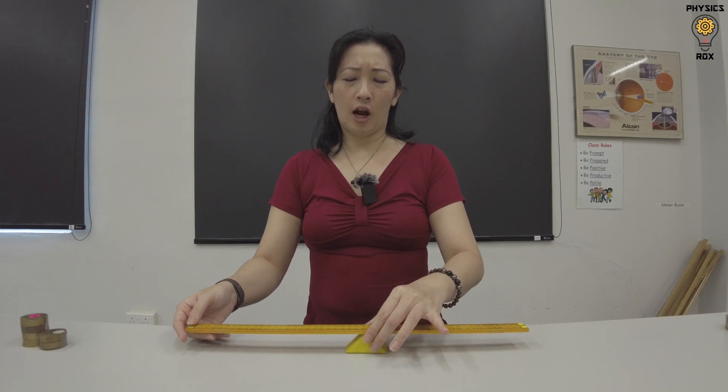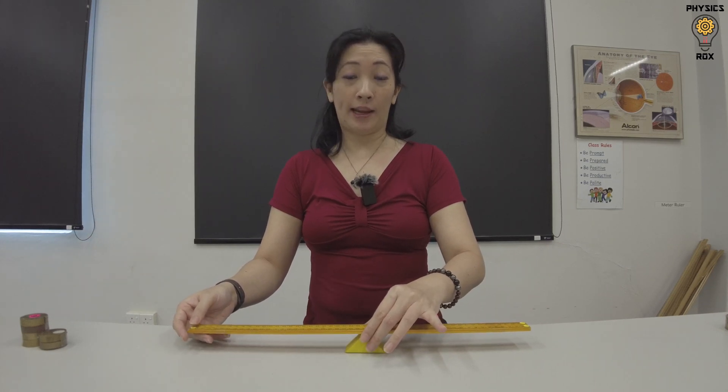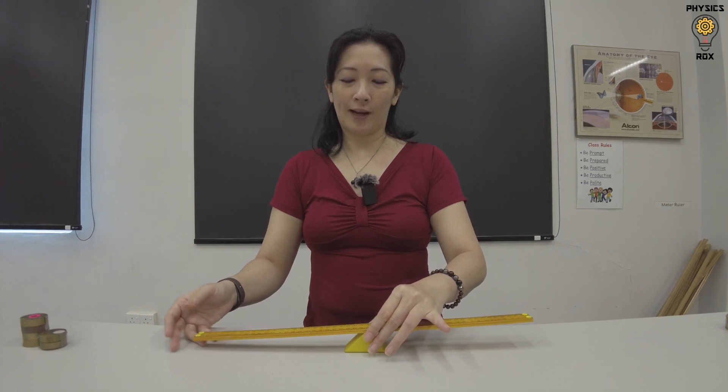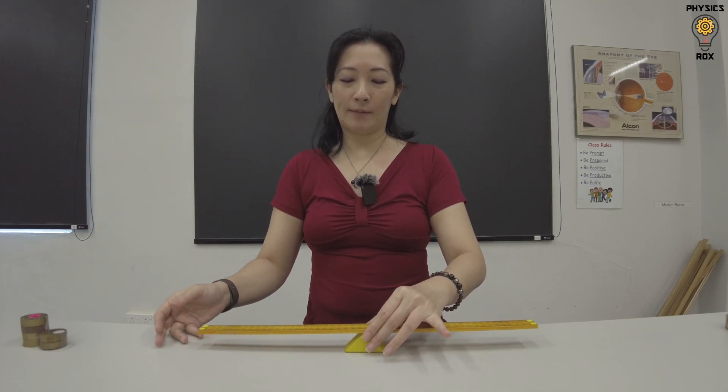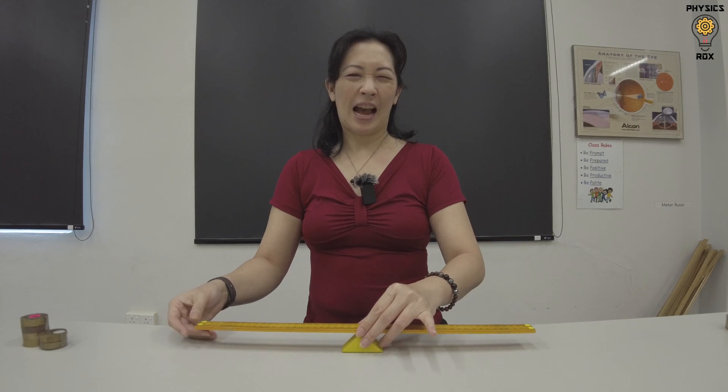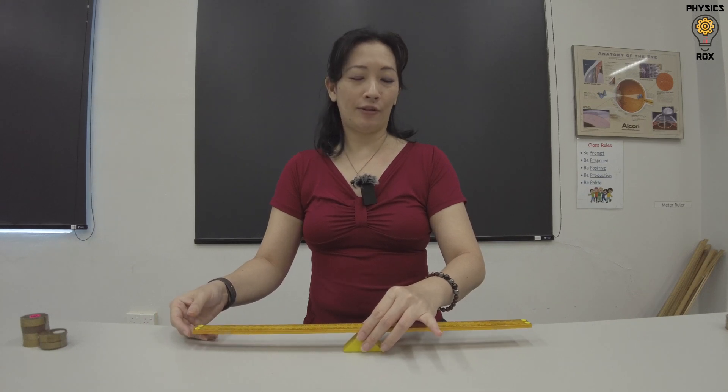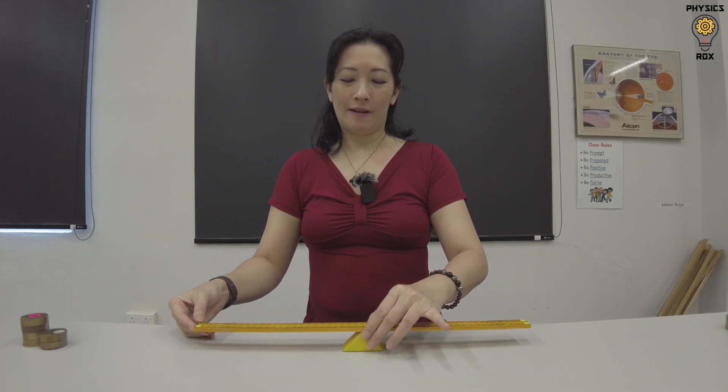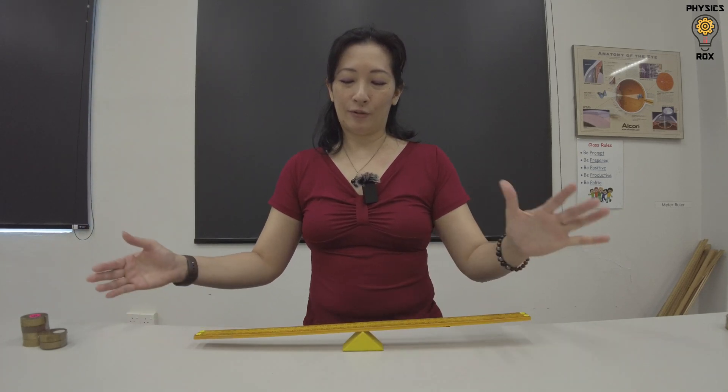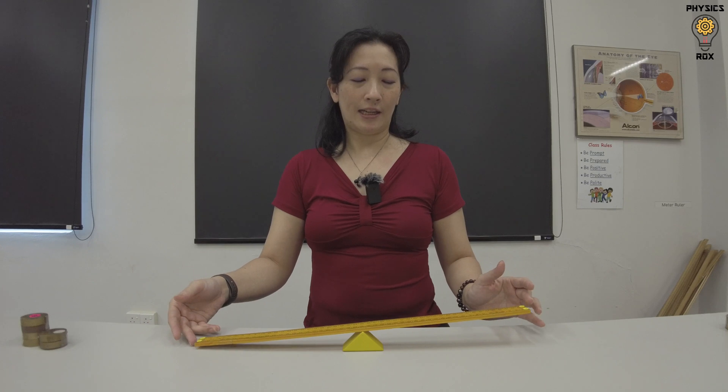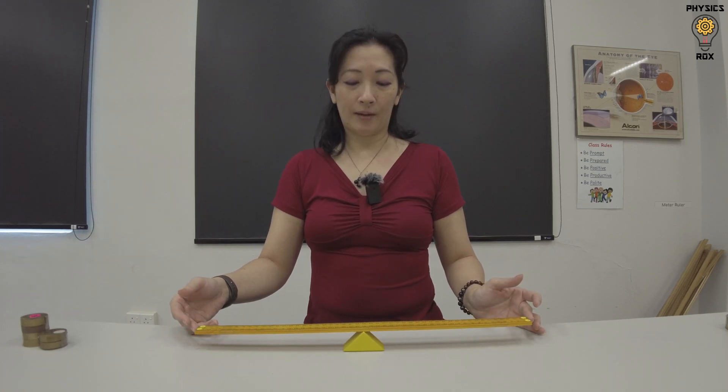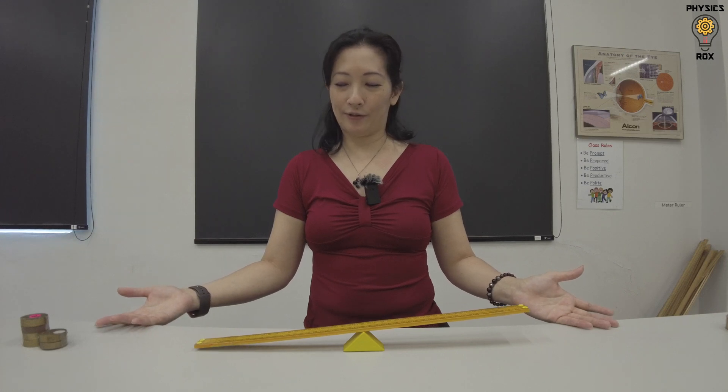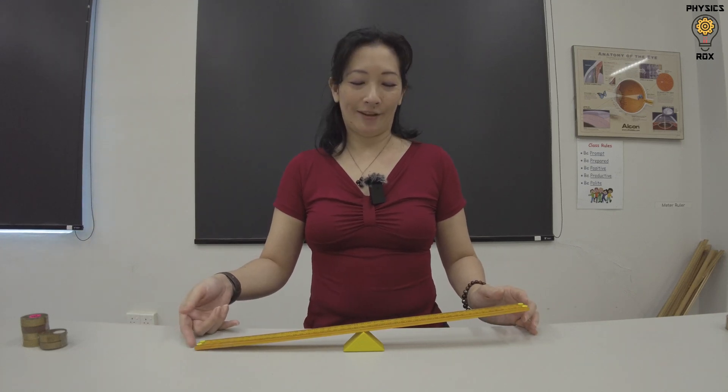Now, of course, if you are really good at being able to balance stuff, if you get the position just right, you'll be able to balance the meter rule perfectly. I'm not so good at this, you're probably going to do a better job than me. But yeah, in a perfect situation, you should be able to get the half meter rule perfectly balanced. Okay, not so good. But you get the idea, of course.